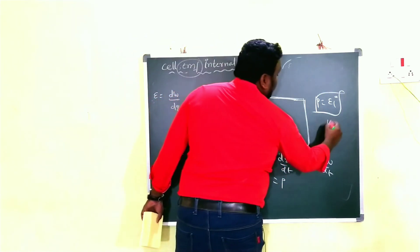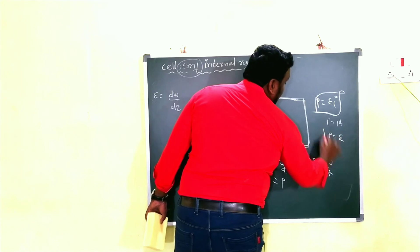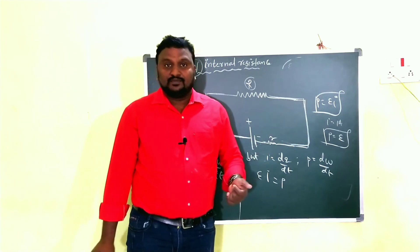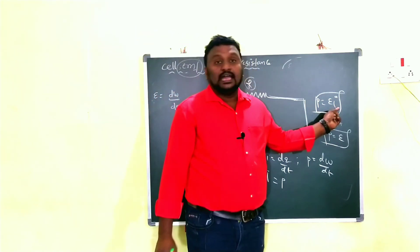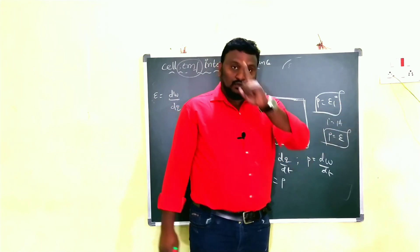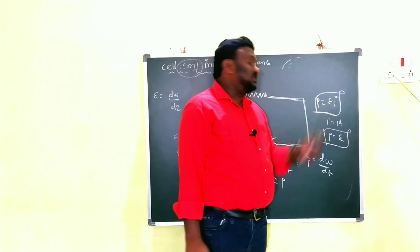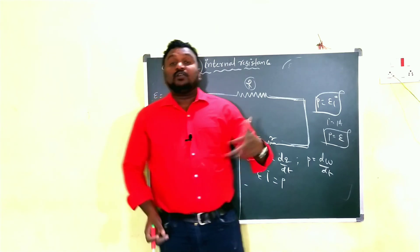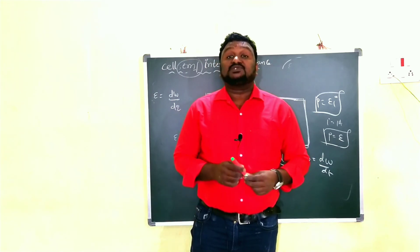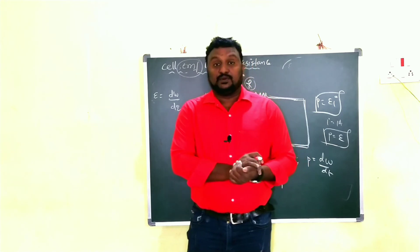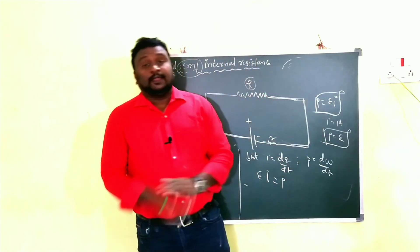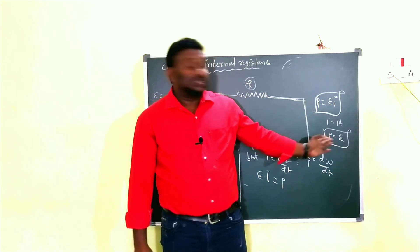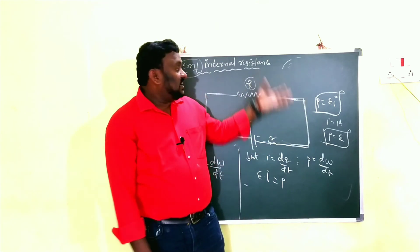From P equals epsilon times I, if I equals 1 ampere, then P equals epsilon. This gives us another definition: the EMF of a cell equals the power of the cell when 1 ampere of current is passing through the circuit. The power of the cell is numerically equal to the EMF of the cell.